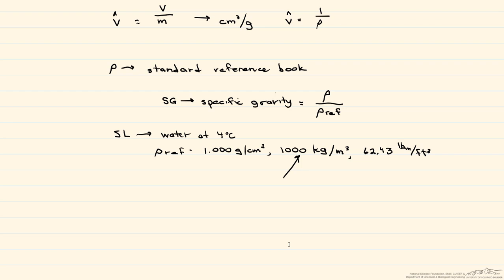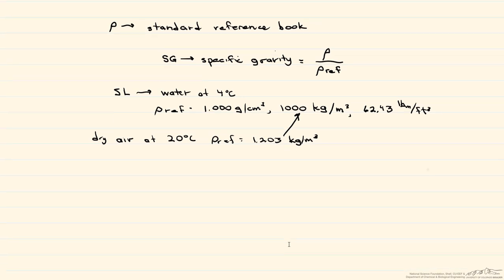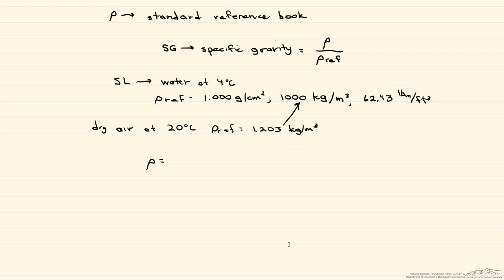Those are the reference densities for liquids and solids. For gases, it's generally dry air at 20 degrees C, which is equal to 1.203 kilograms per meter cubed. In order to find the density of a substance, you multiply the tabulated specific gravity times whatever your reference density is.